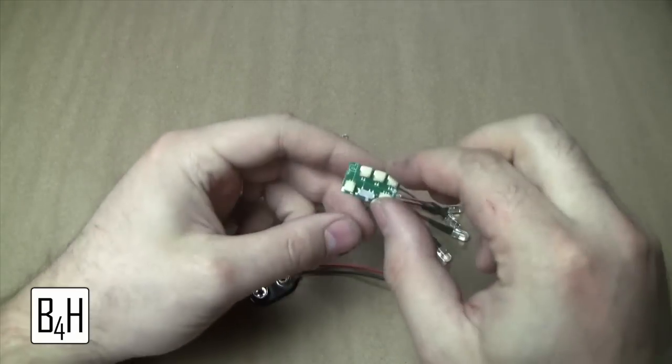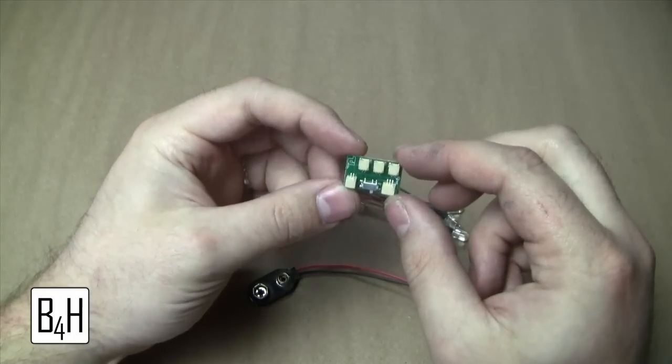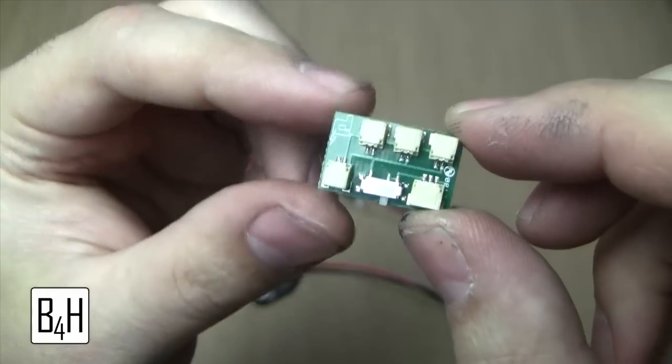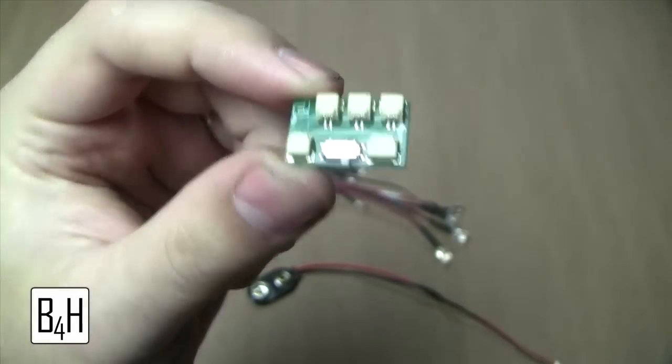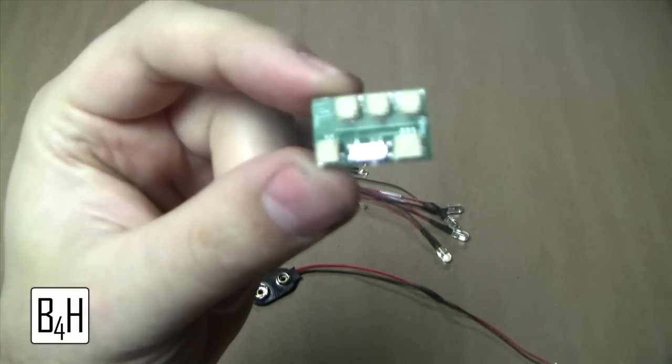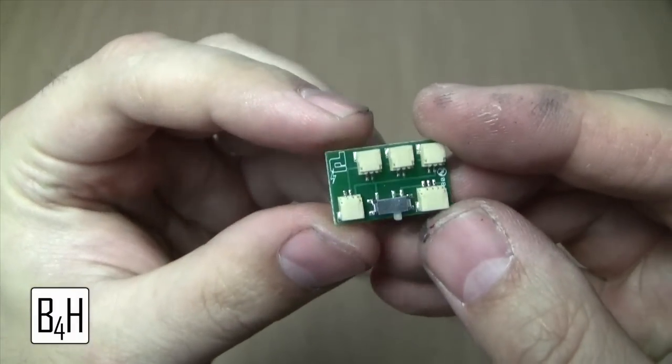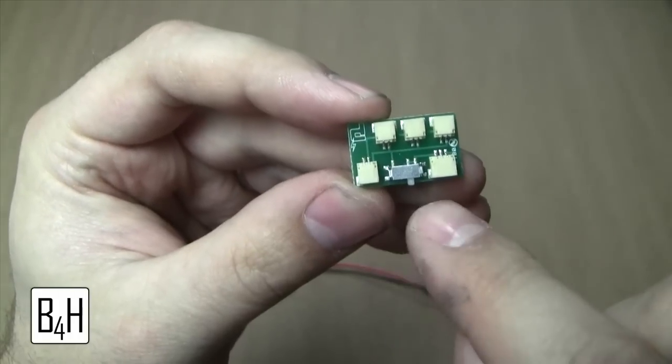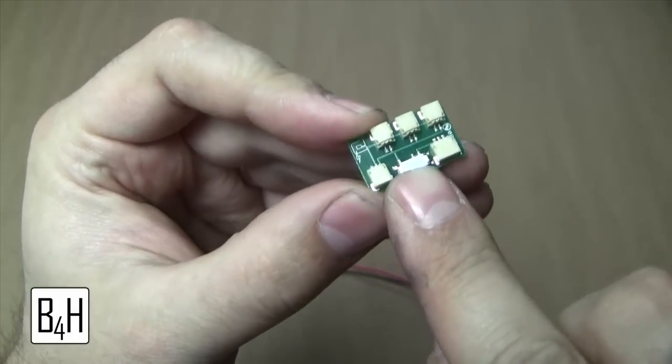And now, finally, we have this piece. This is the brain of the operation, as it were. Looks pretty simple. That's because it is pretty simple. They kept the board intentionally uncomplicated. You've got your power supply here, and then four output ports, and a switch to turn it off and on.